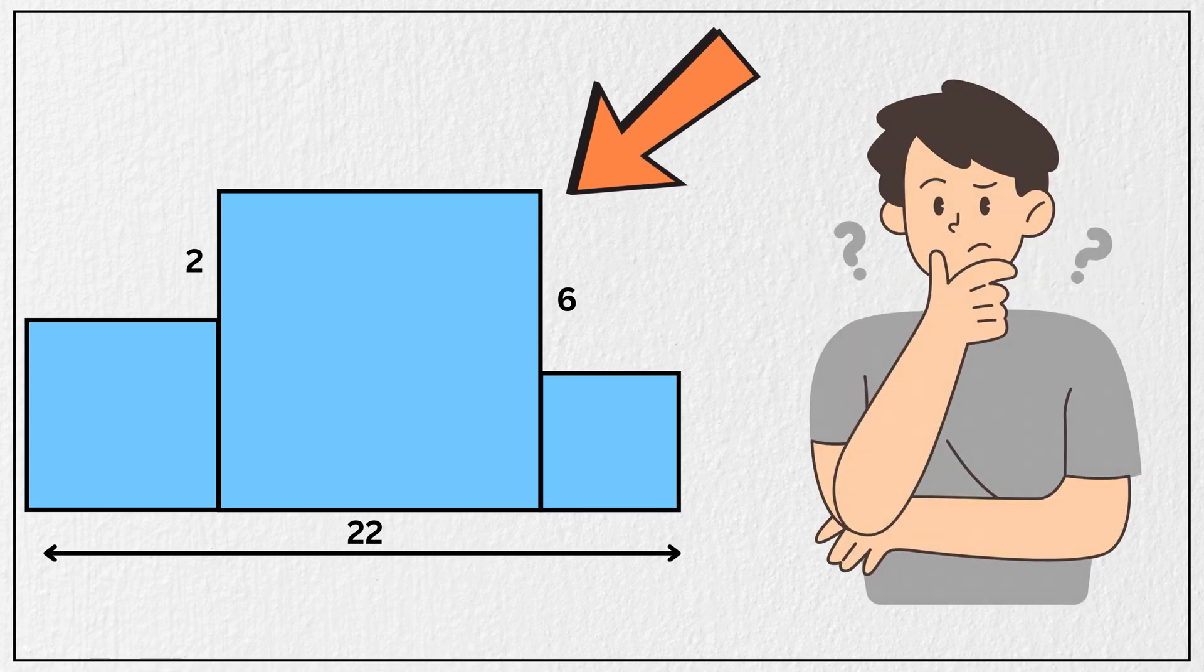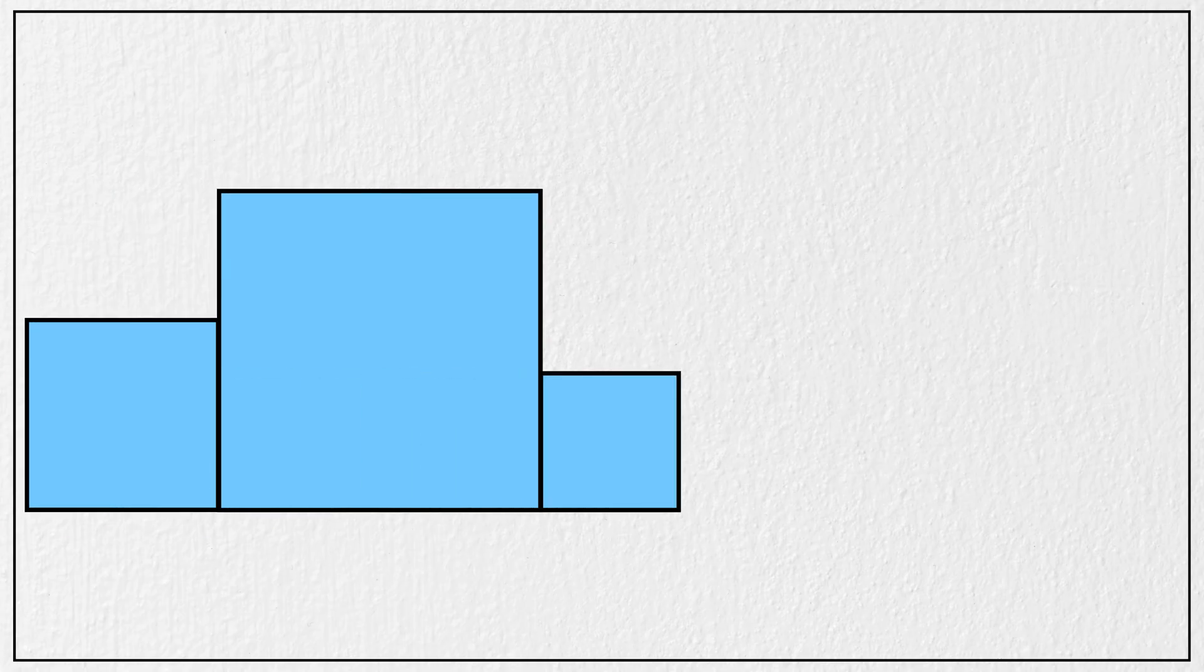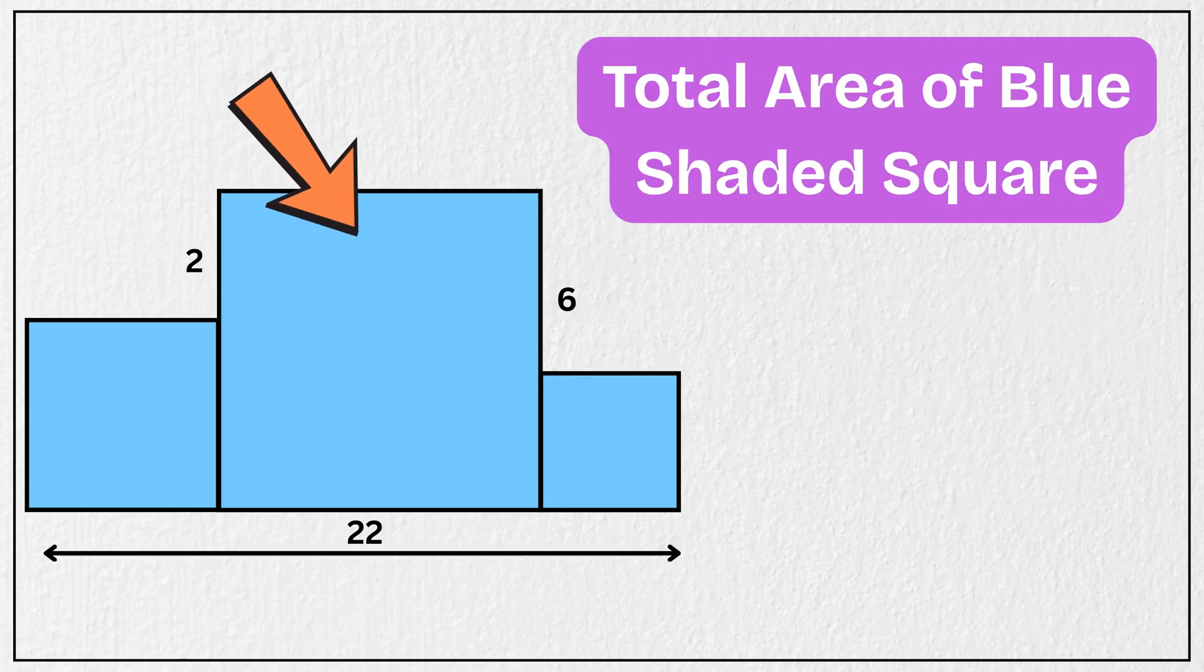This tricky geometry puzzle has left many adults confused, but can you solve this? We are given three squares placed side by side like this. Total length of their combined base is 22 units, and this side length is 2 units, and this side length is 6 units. And our goal is to find the total area of these blue shaded squares.